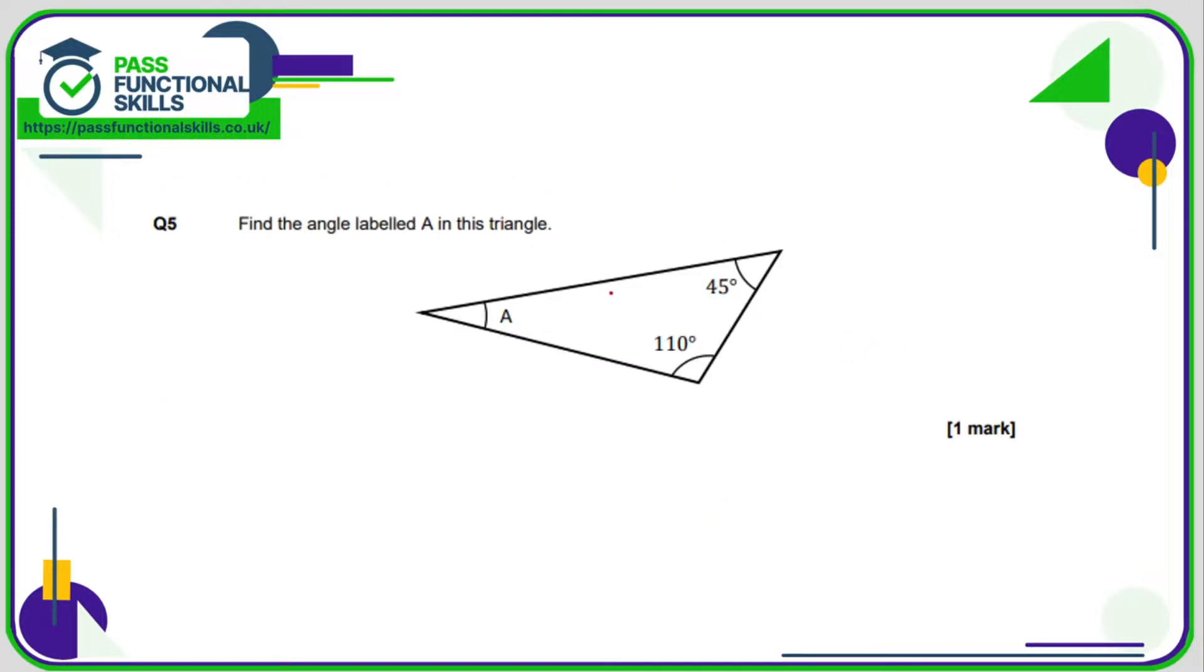Question five is a non-calculator question. We know the angles add up to 180. So far we've got 110 plus 45, which is 155. What's the difference between 155 and 180? Rather than doing subtraction, I'll count up: there's 5 to 160, and then another 20 to go from 160 to 180. That's a difference of 25 degrees.